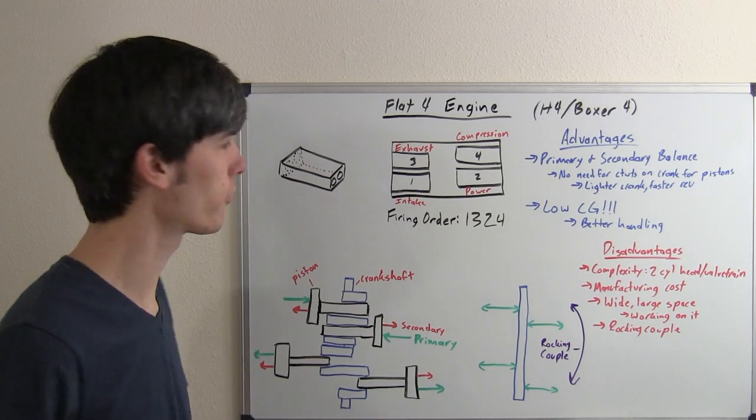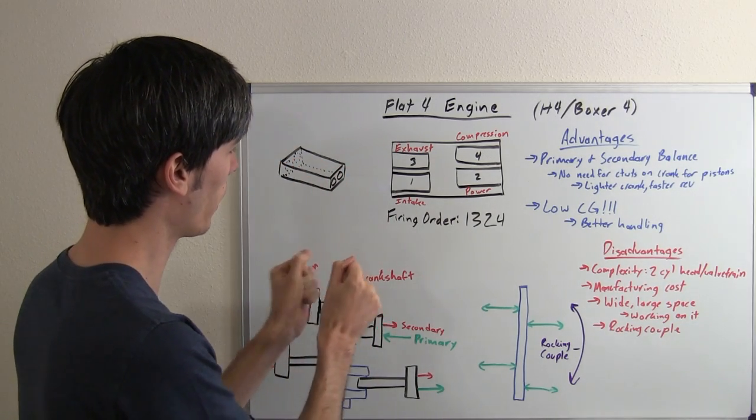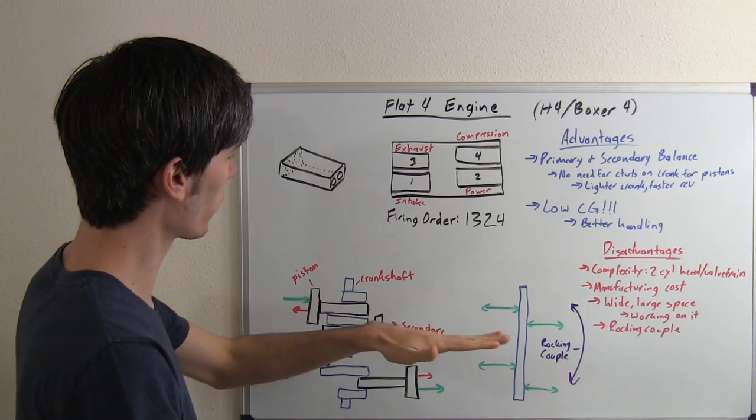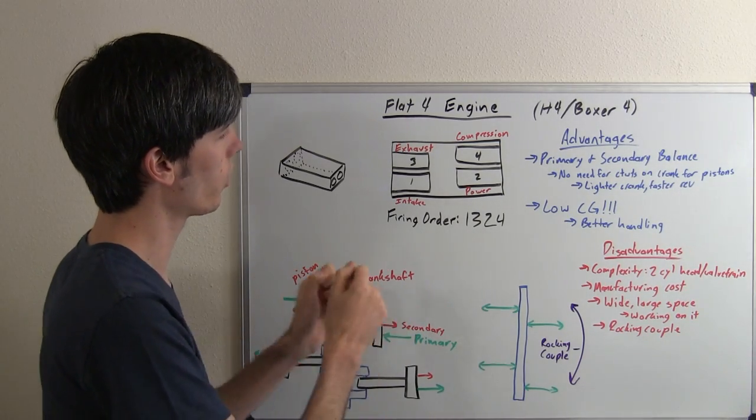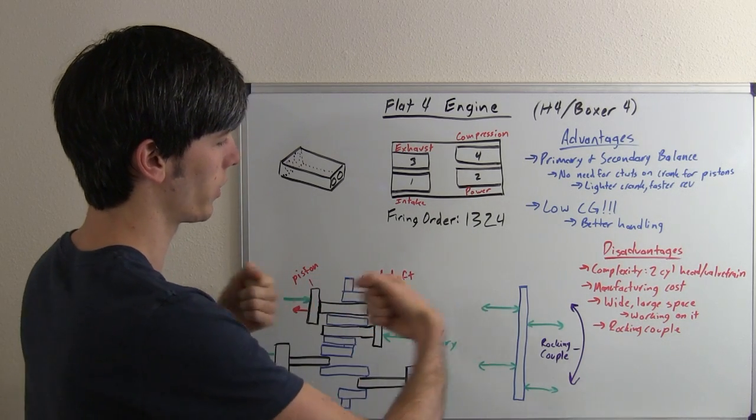The reason they get this flat 4 name is because the engine lays flat and the cylinders are laying flat, horizontal to the ground. What that looks like is you've got your pistons moving back and forth, and that's why it gets the boxer name - it's like two boxers' fists with the pistons.